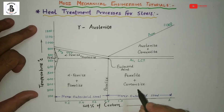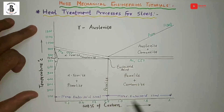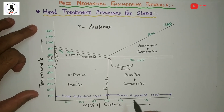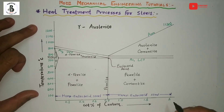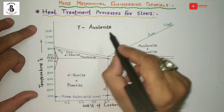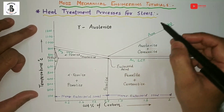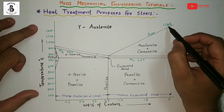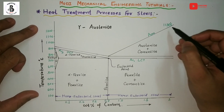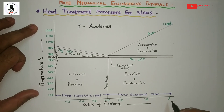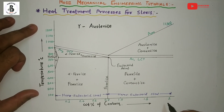Before starting the heat treatment process, there will be a general layout of the heat treatment process chart. This will be related to the iron-carbon diagram for up to 2% carbon present in steels. Heat treatment processes are applicable to steels, so we are only considering up to a temperature range of 1130°C in the iron-carbon diagram, and the weight percentage of carbon up to 2%, because steel is defined as up to 2% carbon with iron.